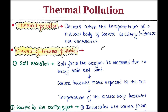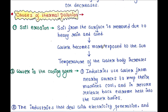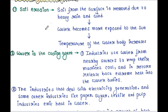Let's talk about some causes of thermal pollution. First is soil erosion. Soil from the surface is removed due to heavy rain and wind, and the water becomes more exposed to the sun. Due to this, the temperature of the water body increases.